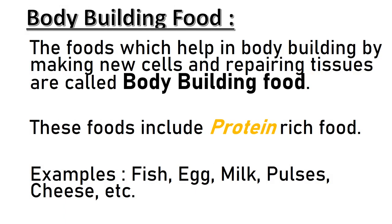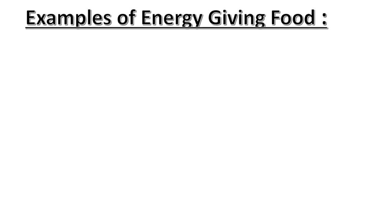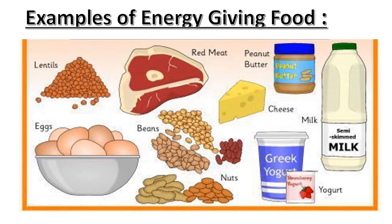Body building food: the foods which help in body building by making new cells and repairing tissues are called body building food. These foods include protein rich food. Examples: fish, egg, milk, pulses, cheese, etc. Some of these are extracted from animals whereas others come from plants.